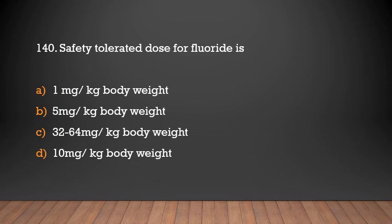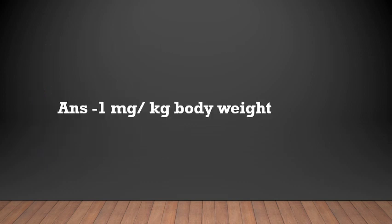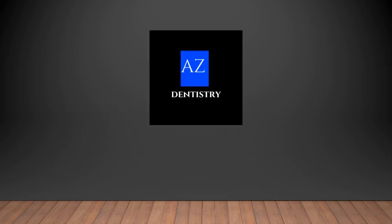Safety tolerated dose for fluoride is: 1 mg/kg body weight, 5 mg/kg body weight, 32–64 mg/kg body weight, or 10 mg/kg body weight? The answer is 1 milligram per kilogram of body weight. That's all for today's topic — see you in a new video, thank you.